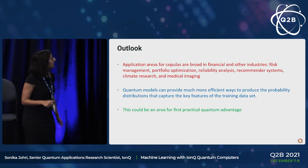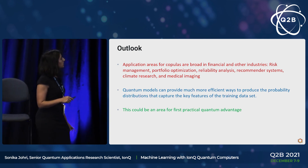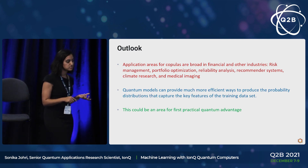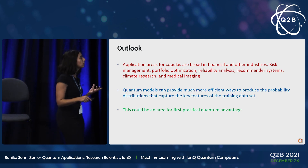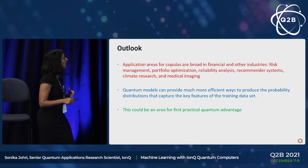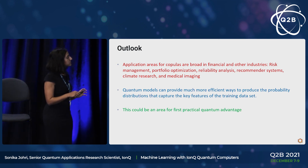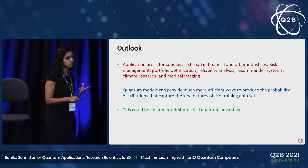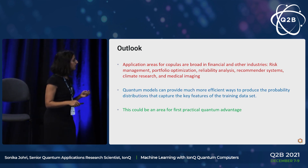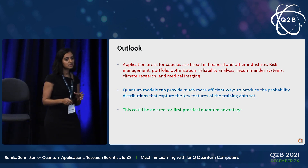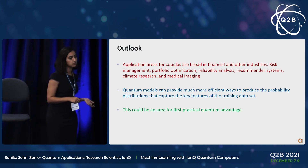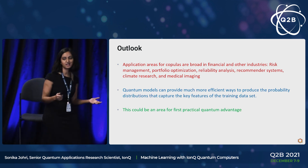The take-home messages: the application areas for copulas are extremely broad — financial industry, engineering reliability analysis, advertising, climate research, and medicine. Quantum models are much more efficient representations of copula functions and can efficiently reproduce probability distributions that capture key features of the training dataset. We believe this could be an area for first practical quantum advantage. With that, I'll end and am happy to take questions.